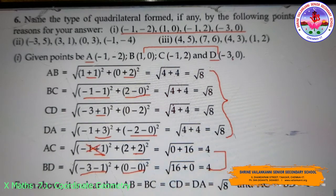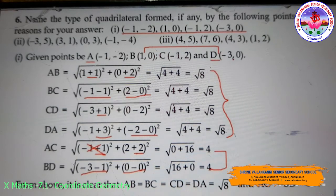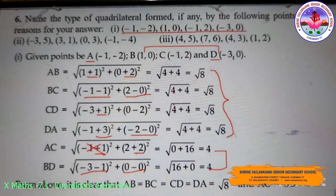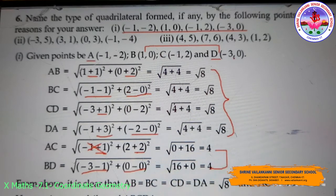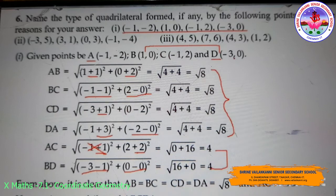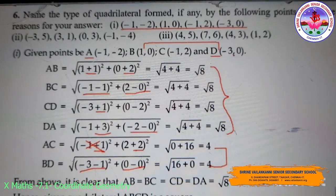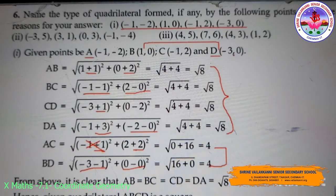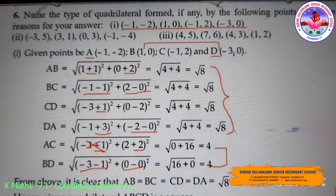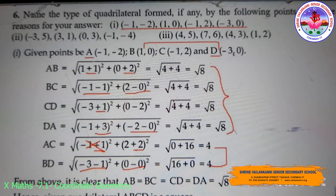Similarly for BC, with B(1, 0) and C(-1, 2): BC = √[(x2 - x1)² + (y2 - y1)²]. Substituting the values I get √[(-2)² + (2)²] = √(4 + 4) = √8.